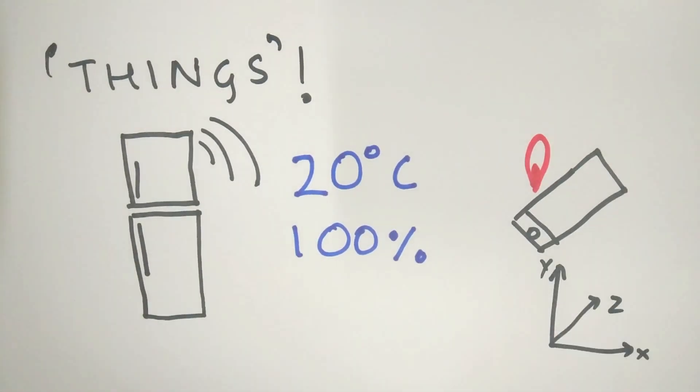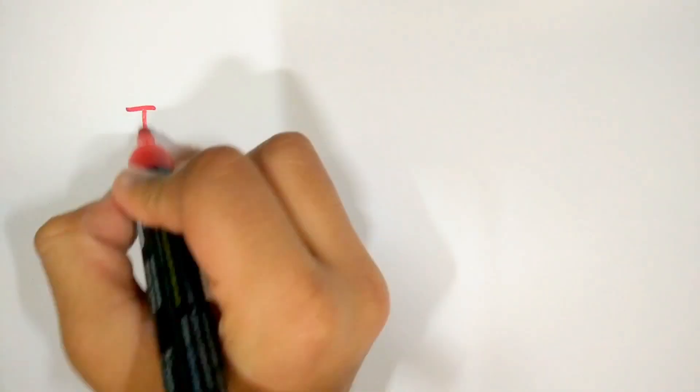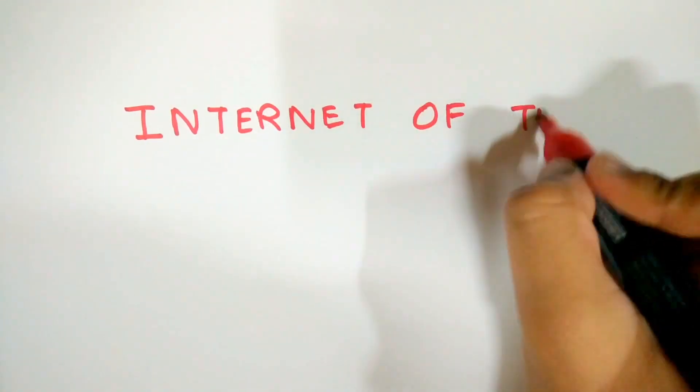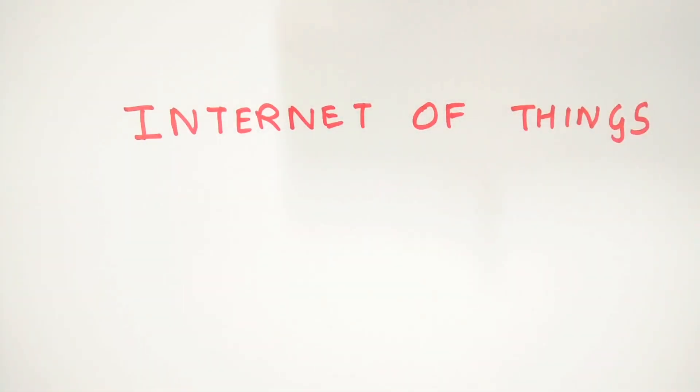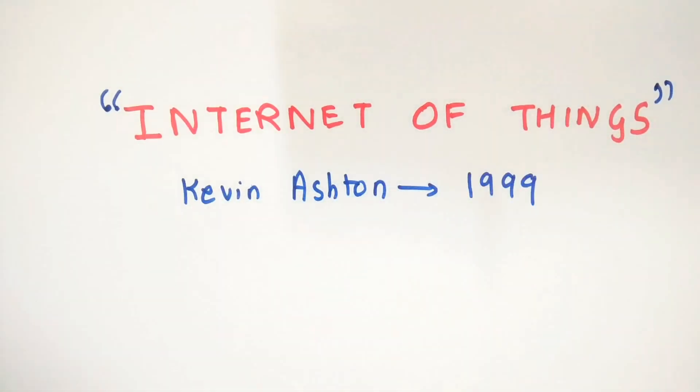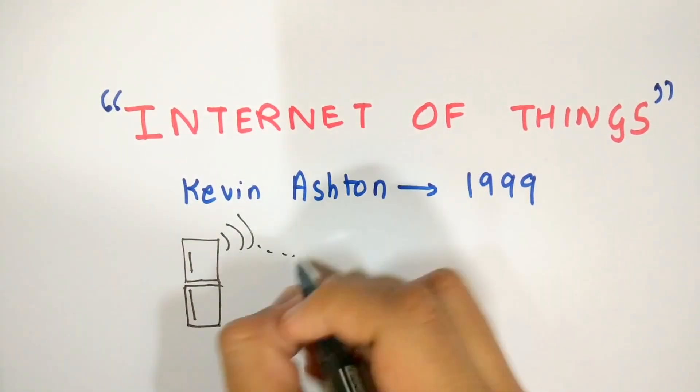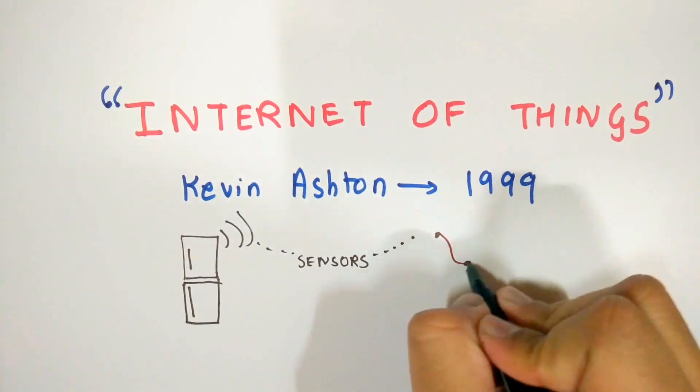But there is something missing: communication. The Internet of Things is an expansion of the internet where even things can communicate. The term Internet of Things was first used by British tech pioneer Kevin Ashton in 1999, while he was referring to a system in which physical real-world objects could be connected to the internet using sensors.